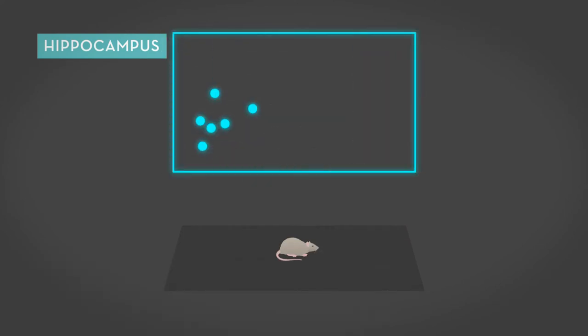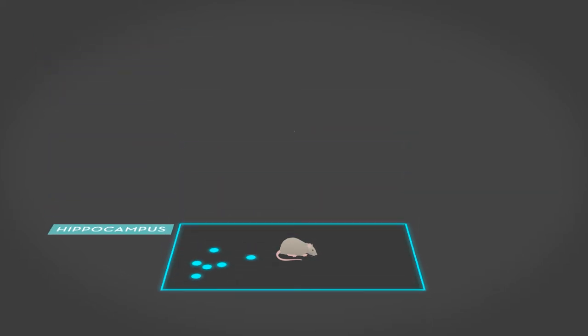But what stimulated these place cells in the hippocampus to be activated when the animal was at a certain location? In other words, where did the information come from? Over 30 years later, in 2004, while studying cell connections in the hippocampus,